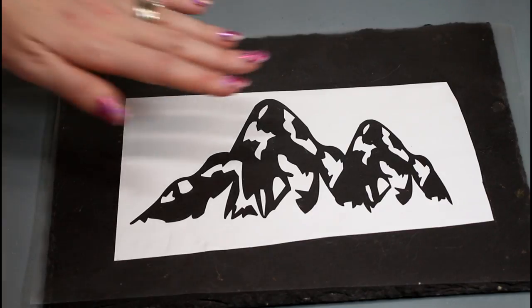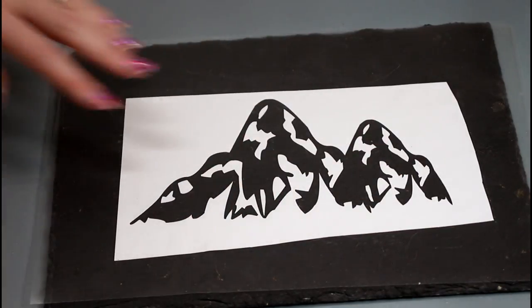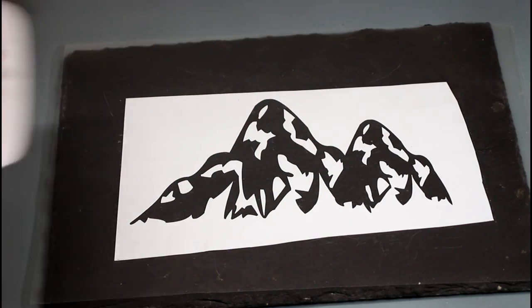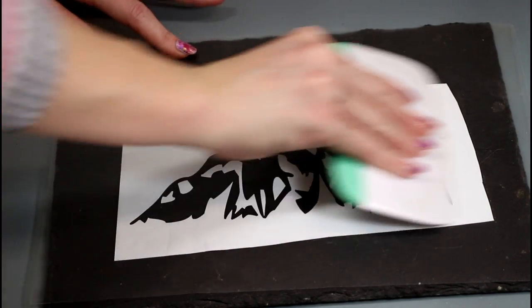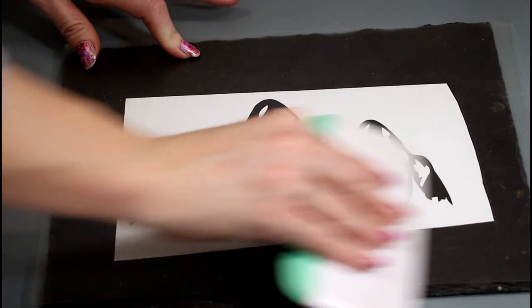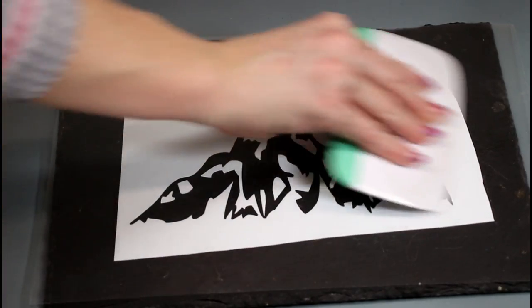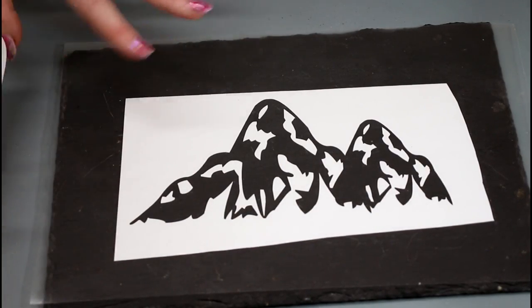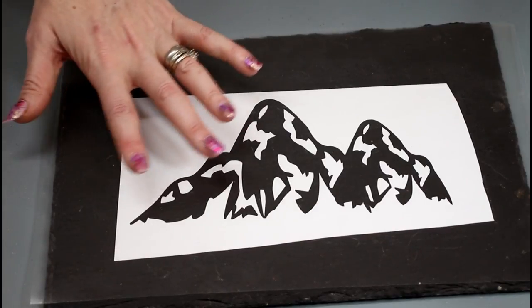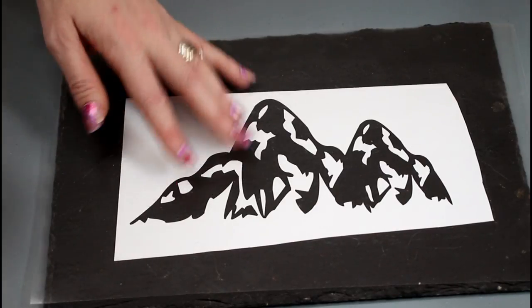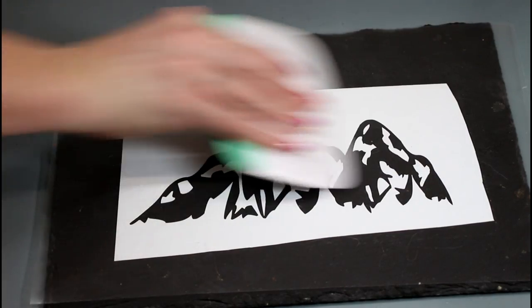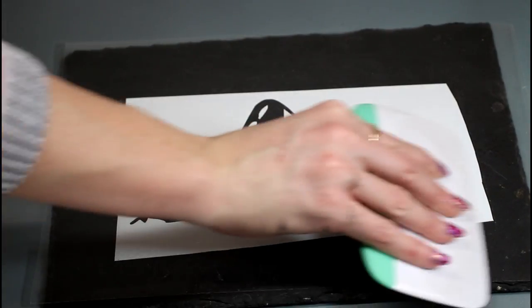You can see that I've placed my transfer tape onto my slate now, so I'm going to go in with my scraper and I'm going to give it a really really good scrape. Now slate can sometimes be tricky. Sometimes it will allow your vinyl to adhere to it straight away, and other times it can be a bit of a nightmare.